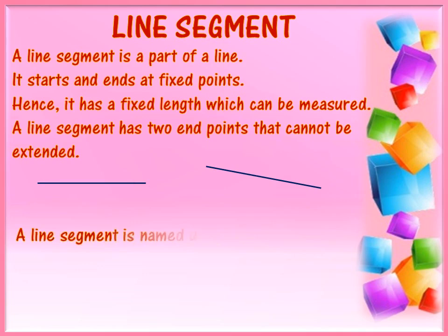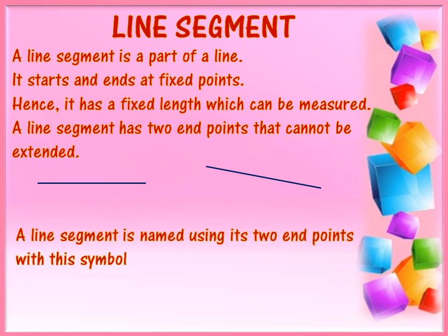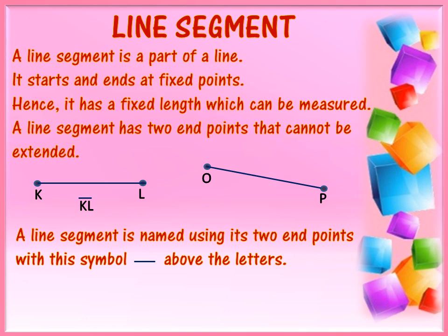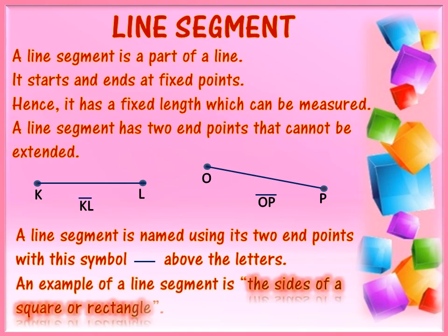A line segment is named using its two end points with this symbol above the letters. In the first example, if one end point is K and the opposite end point is L, then the line segment will be called KL. In the second example, if one end point is O and the other end point is P, then the line segment will be called OP. An example of a line segment is the sides of a square or a rectangle.